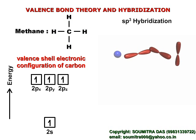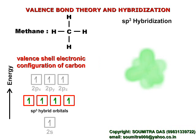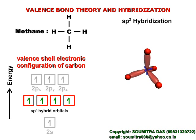Therefore, all these 4 orbitals take part in hybridization like this. After hybridization, the hybrid orbitals are formed like this. They are known as sp³ hybrid orbitals because they are formed by mixing of 1s and 3p orbitals. The 4 hydrogen atoms' 1s orbitals make sigma bonds with these 4 hybrid orbitals.